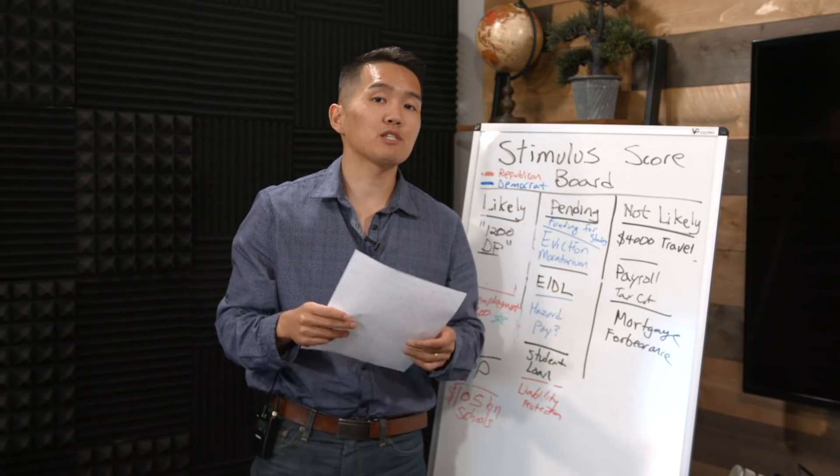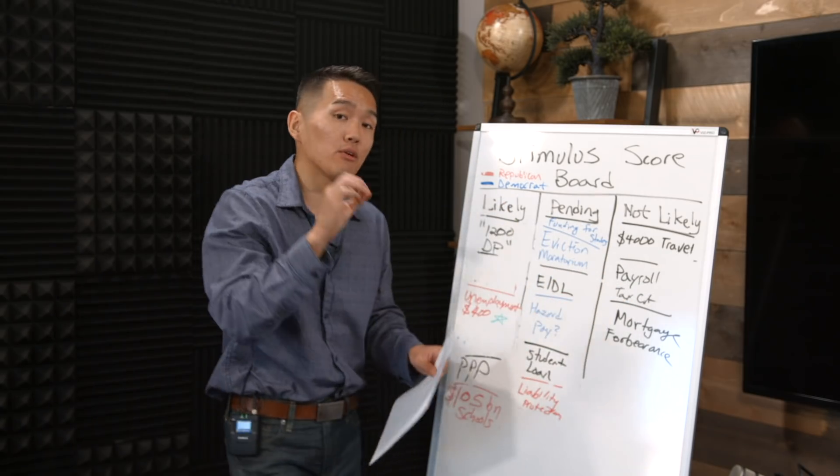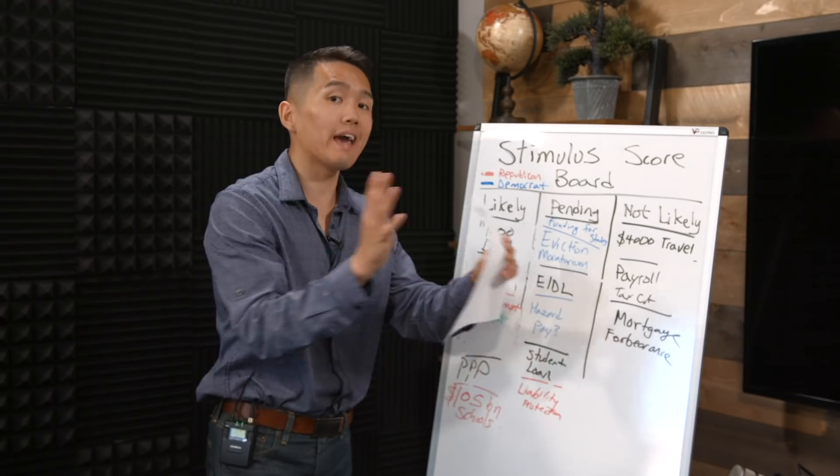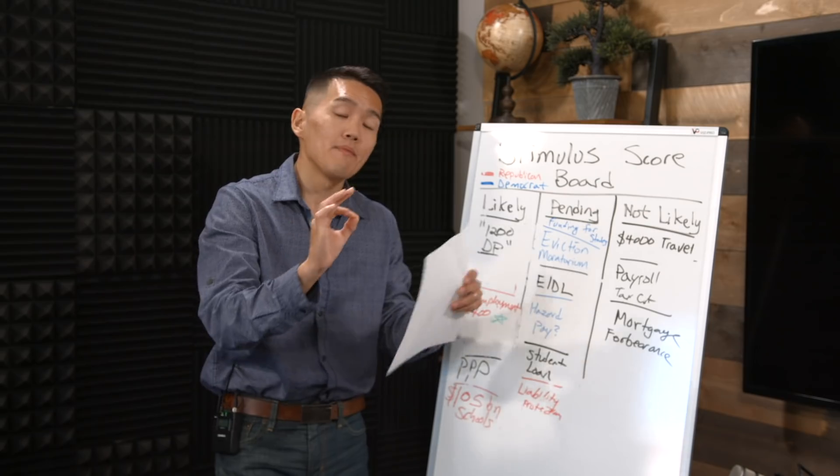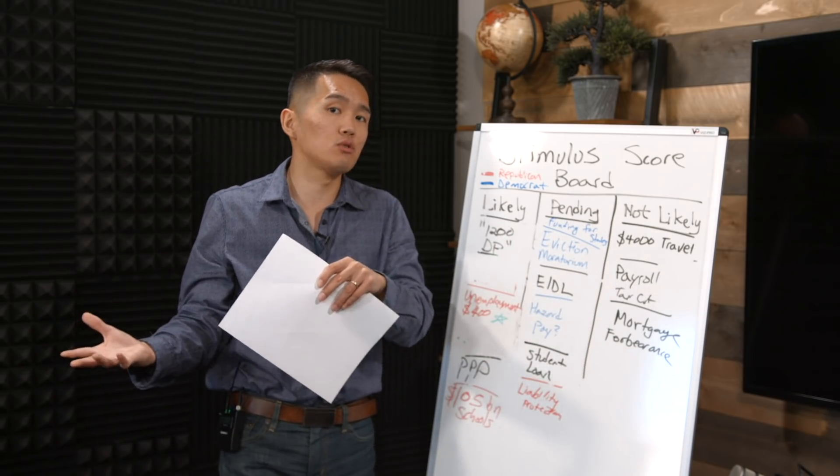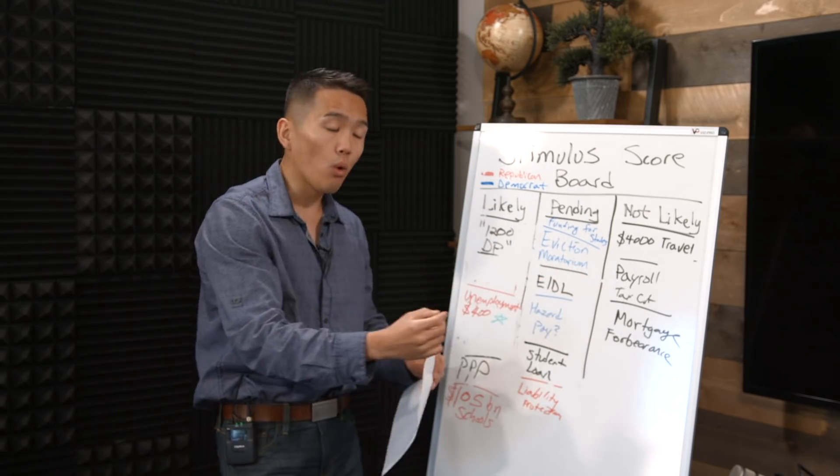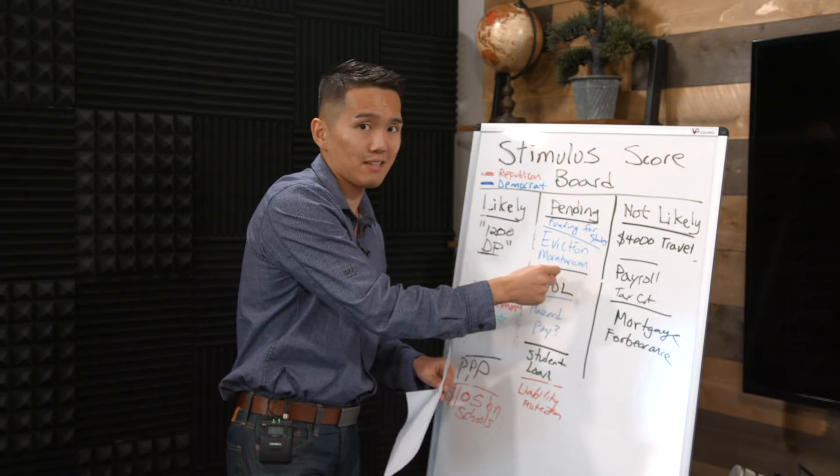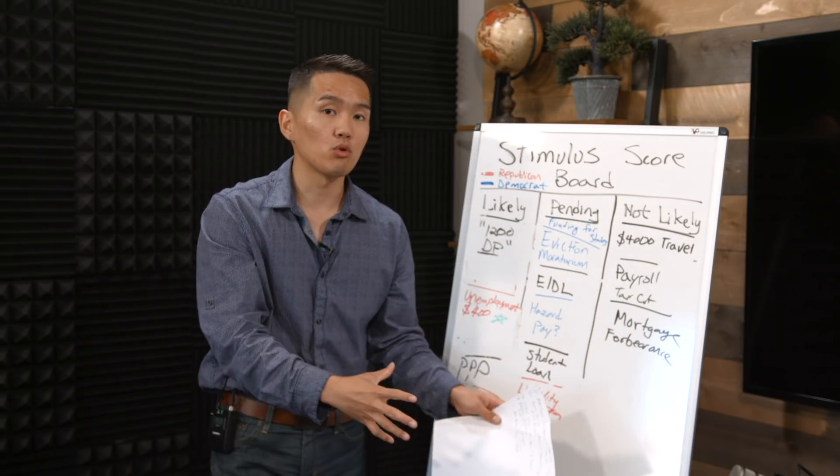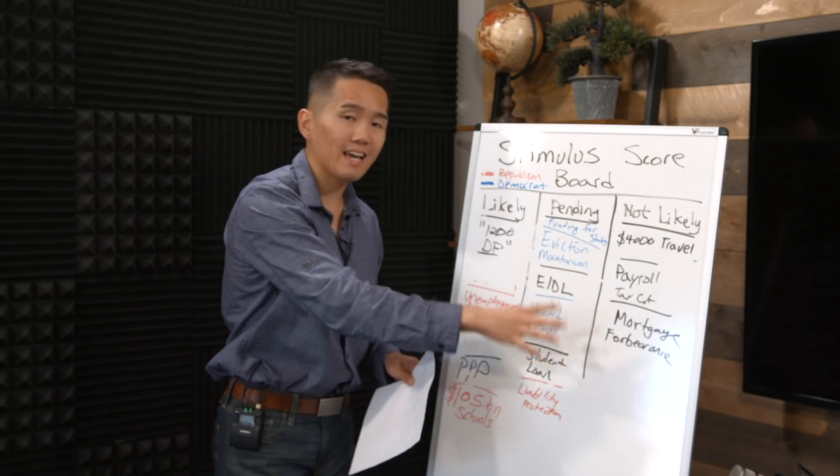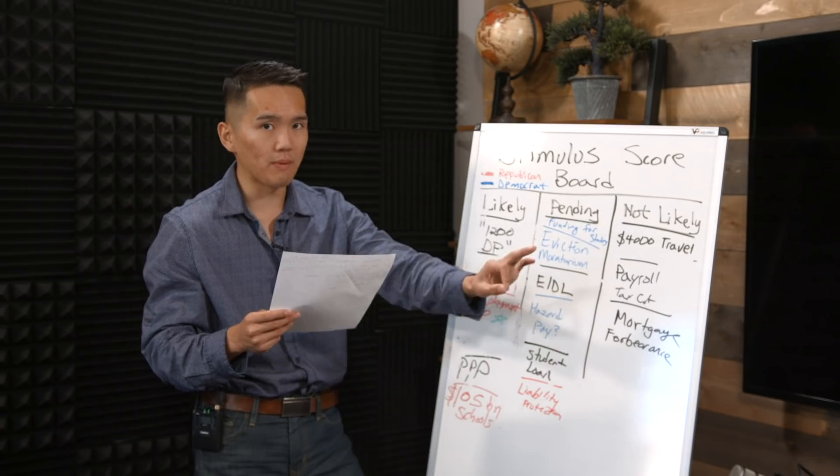The number two item as far as what President Trump signed in as an executive order is the deferment of payroll taxes. The key word is defer, which means that it's delaying. So it's not forgiving, it's not going away, it's simply deferring, which means that some point later down the road, Congress either has to make an appropriation to either forgive the deferred payroll taxes, or individuals would have to pay the payroll taxes somehow. It's simply a band-aid at this point.